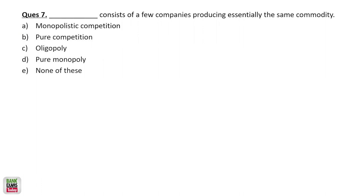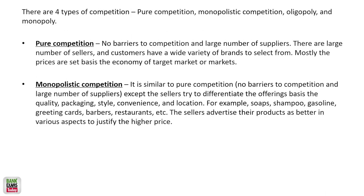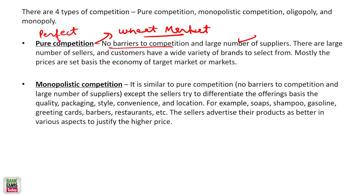There are four different types of competition. Pure competition — also called perfect competition. Example: wheat market, grain market. Farmers are not differentiating themselves. There is a large number of suppliers, no barriers to competition, anybody can sell in these markets. Prices are set by the market economy — the farmers are not setting their prices themselves. They are price takers. That is perfect competition or pure competition.